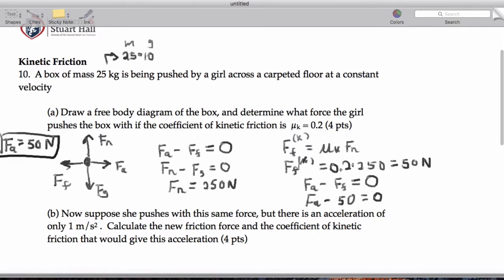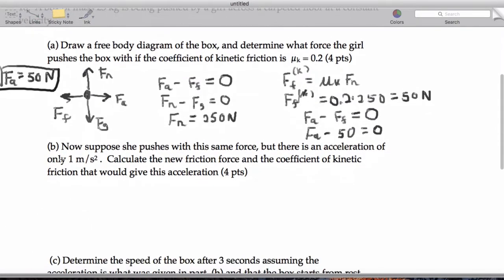Excellent. Now, in part B, what we are told is that we have our object moving a little bit differently in that we've kept the pushing force the same, but now we have an acceleration of 1 meters per second squared. Just to be absolutely clear on what that means, if we have an acceleration of 1 meter per second squared, we need to get very clear on the fact that what that tells us is that the forces are unbalanced. So now we have Fa, as given in part A, minus a new force of friction, equals M times A.